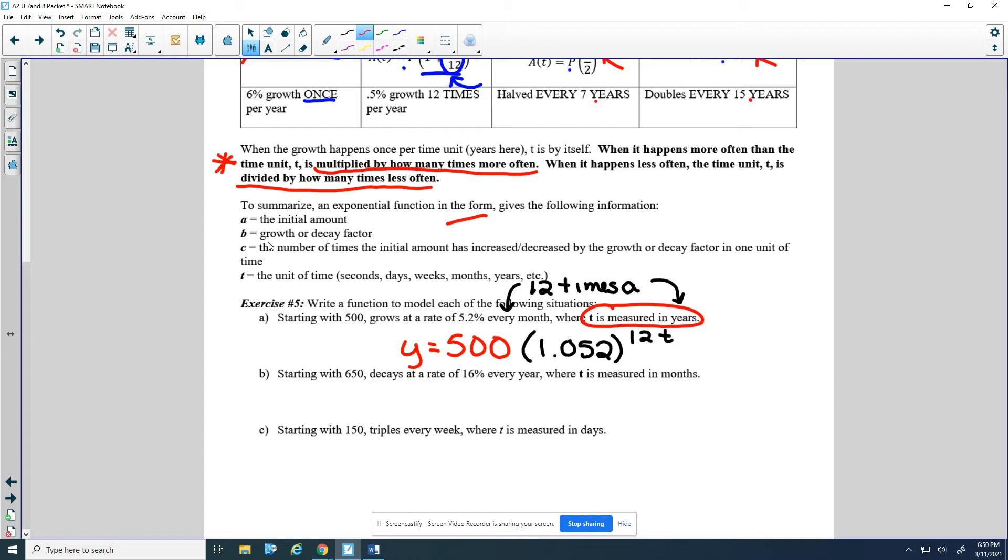Looking at the next one, starting with 650. It decays at a rate of 16% every year, but now t is months. So basically, t is months, but I don't get to decay every month. I have to wait all the way to a year. So first off, my base, 1 minus 0.16 because we're decaying, is 0.84.